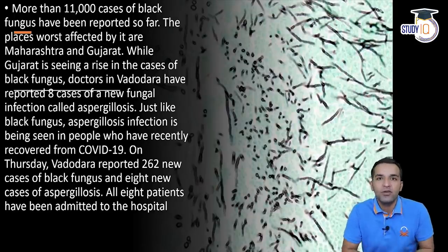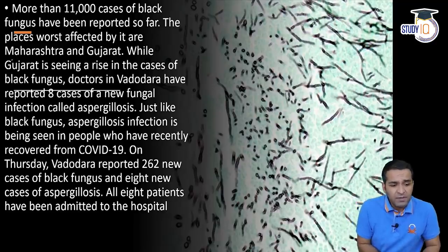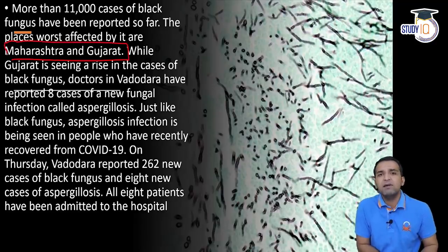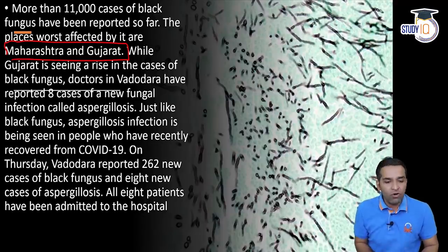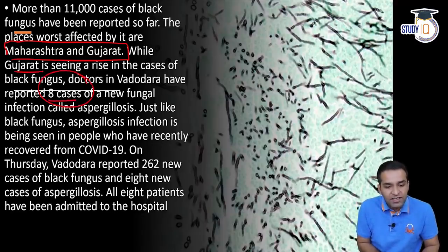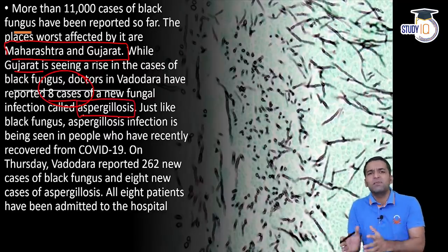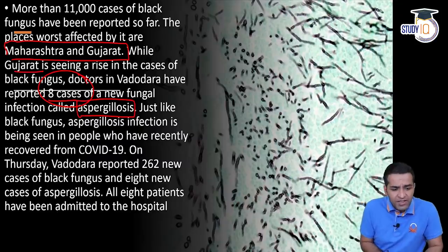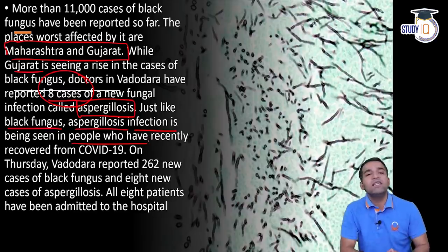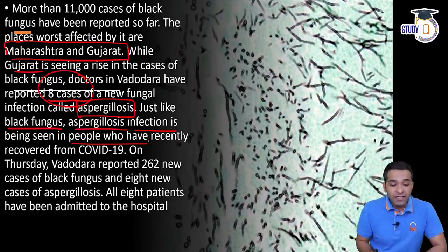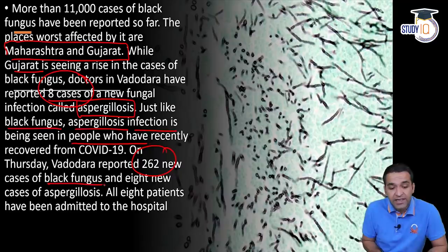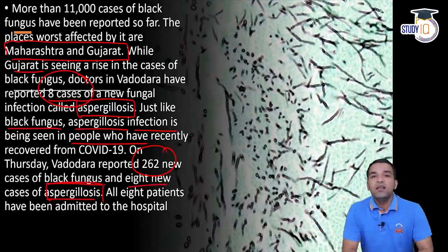Ab is topic se iska connection kya hai - 11,000 se bhi zyada cases hain black fungus ke jo report kiye jaa chuke hain, jis mein Maharashtra aur Gujarat basically sabse number one par hain. Gujarat ke andar ek aur case aaya hai Vadodara ke andar jis mein 8 cases aaye hain aspergillosis ke. Us bimari ka naam hai aspergillosis - ye bhi ek prakar ki fungus se phailti hai, just like black fungus. Aspergillosis infection has been seen in the people who recently recovered from COVID-19. Vadodara ne 262 black fungus ke naye cases report kiye hain, aur 8 new cases of aspergillosis have been reported.